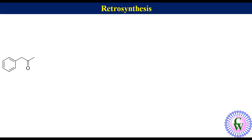Phenyl acetone has a keto group that can be obtained from the corresponding alcohol via functional group interconversion by oxidation.